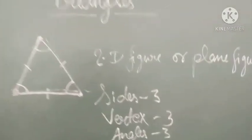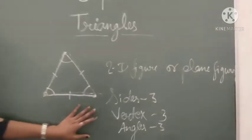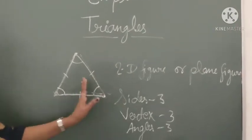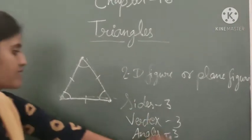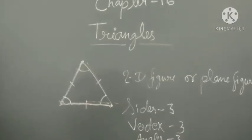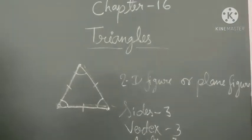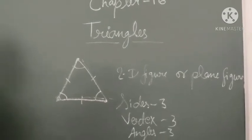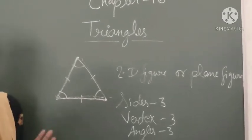So this is all about a triangle. A triangle is a 2D figure. It has 3 sides, 3 vertices, and 3 angles. Now I am going to explain the types of triangles.